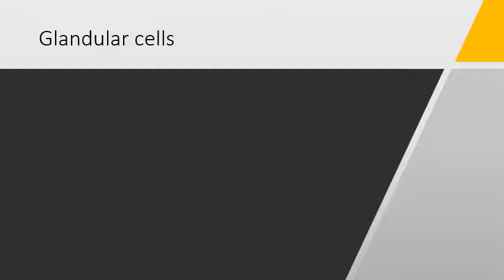The glands found in the body wall of the Turbellaria are called glandular cells. Usually they are epidermal in origin and found on the ventral sides of the body.